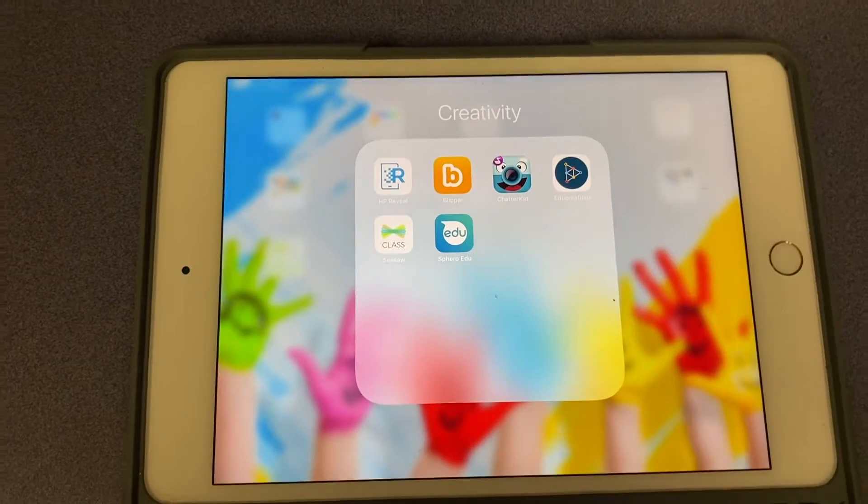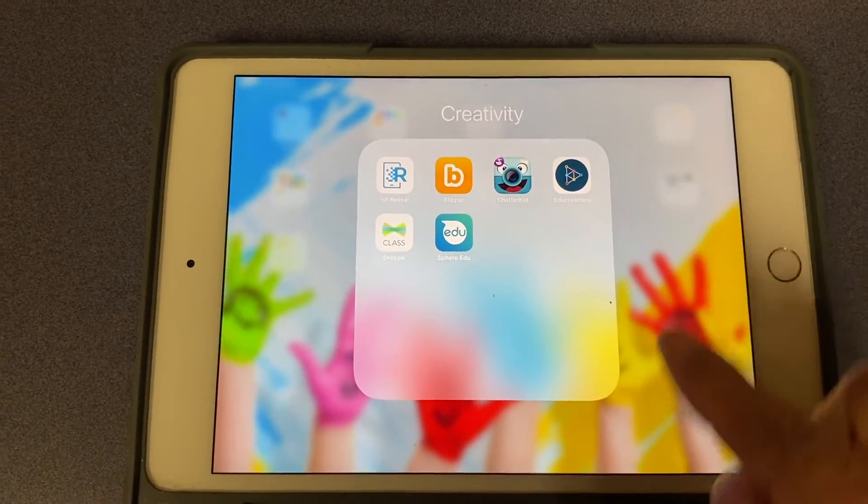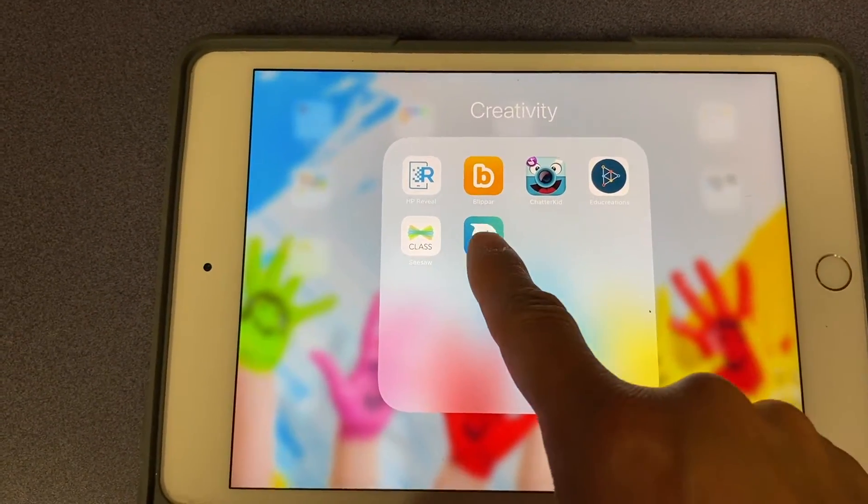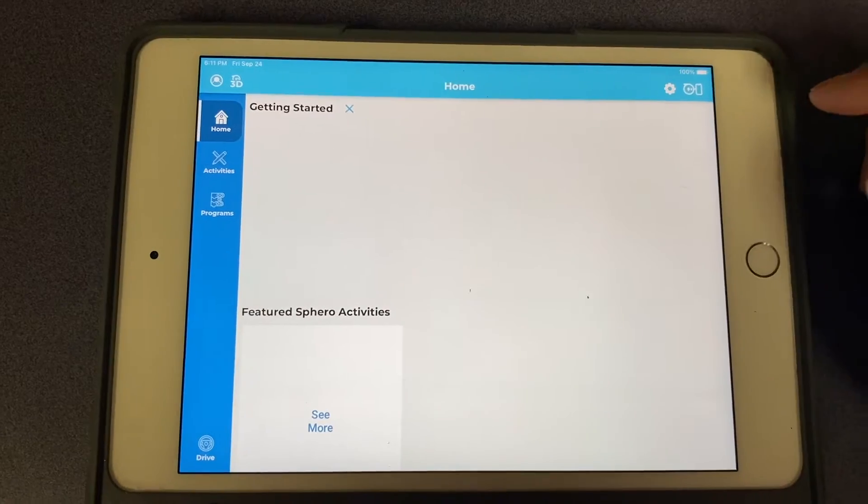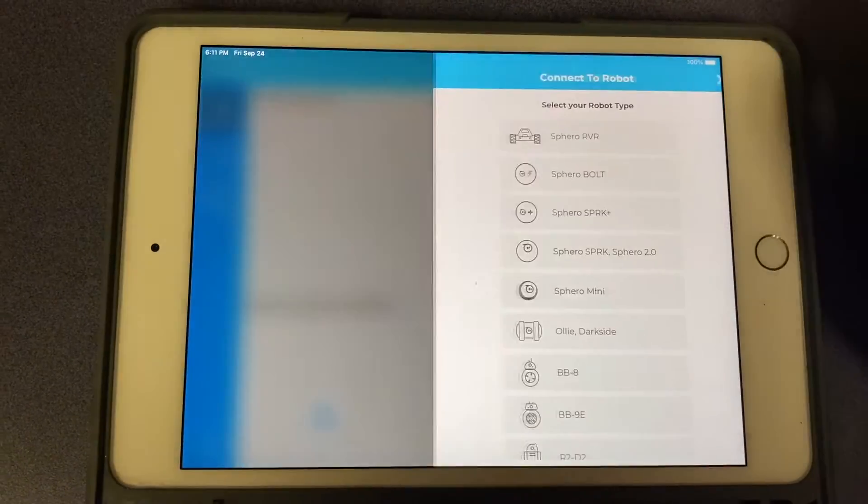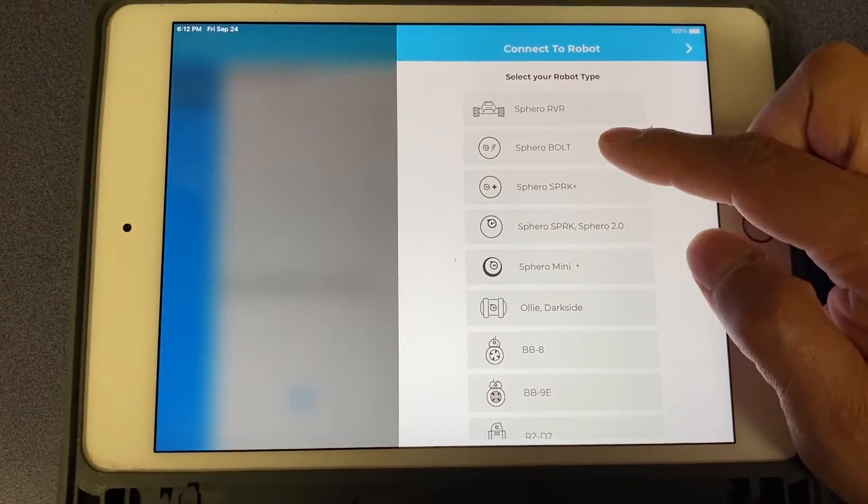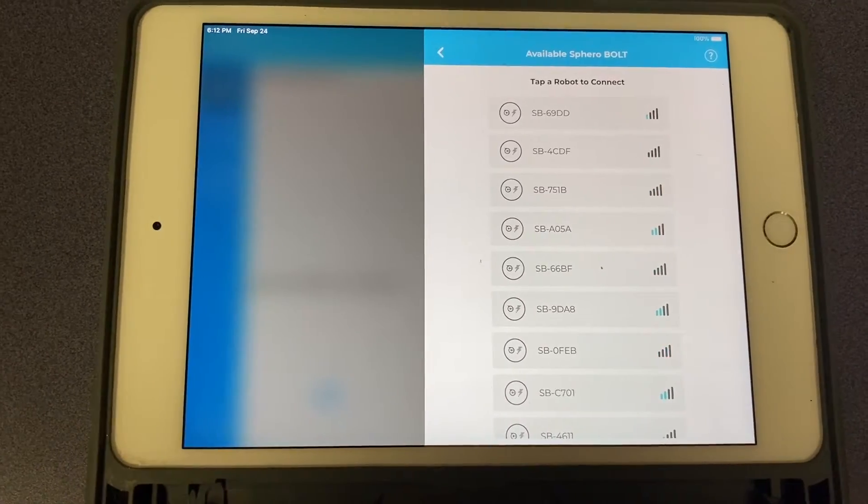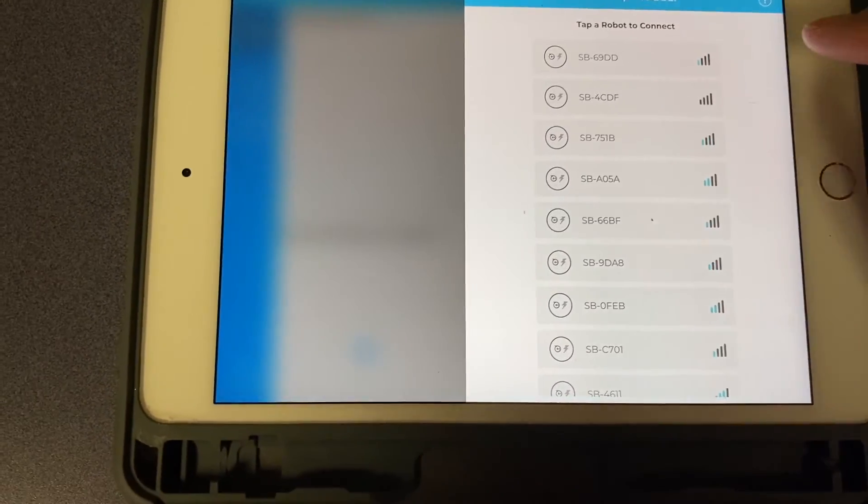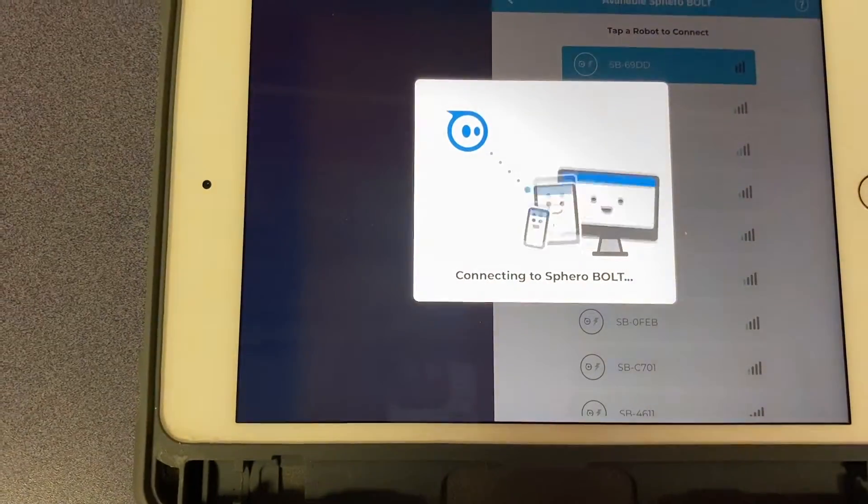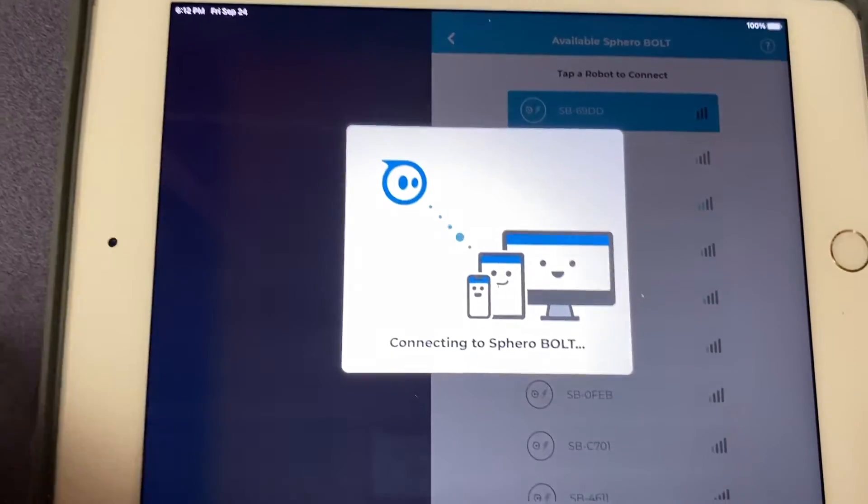Hello students, to use the Sphero robot on the creativity folder, please go ahead and open up Sphero Edu. Next, go ahead and click right here and we're going to be using a Sphero Bolt. And then you're going to see the line, so you're going to click on one of those lines so it's connecting to one of those robots.